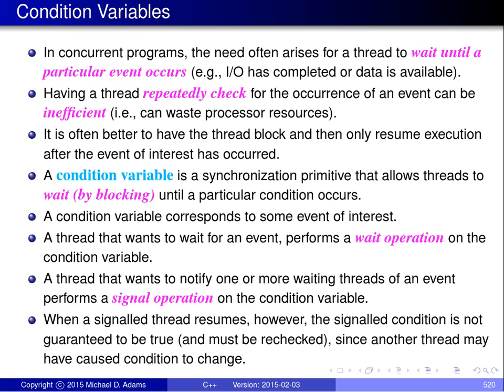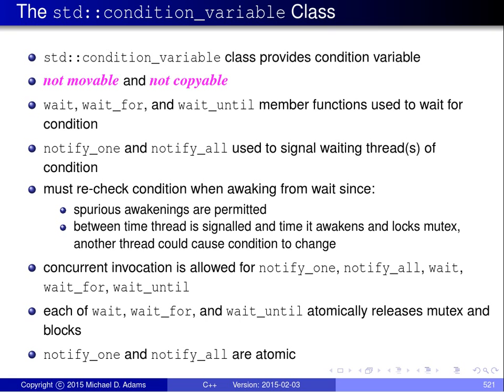There's another reason for needing to recheck the condition upon awakening from a wait operation. In some implementations of condition variables, spurious awakenings are permitted. A spurious awakening simply means that the thread waiting on a condition variable can be awoken without a signaling operation having been performed by any thread. So for this reason, it's also necessary to check the condition associated with the condition variable upon awakening, since the condition is unlikely to be true in the case of a spurious awakening.